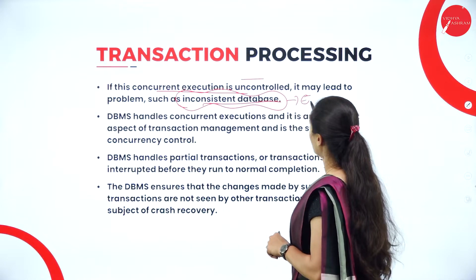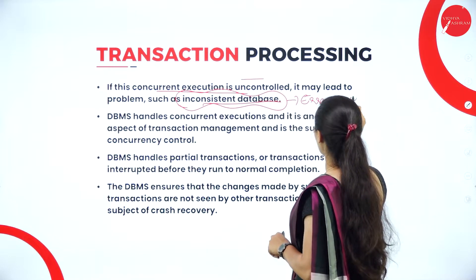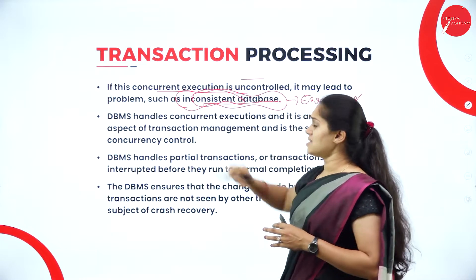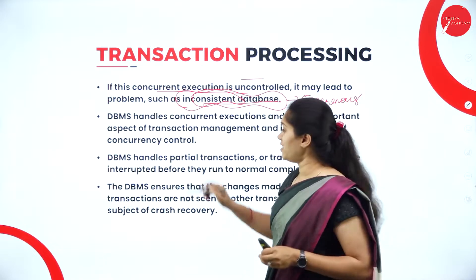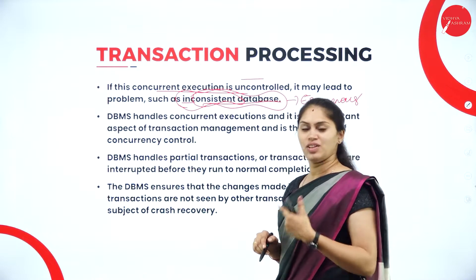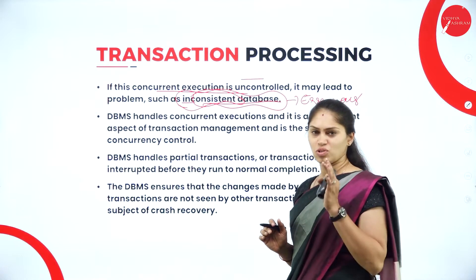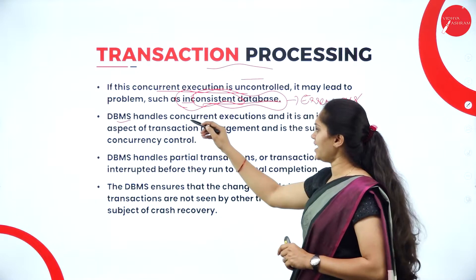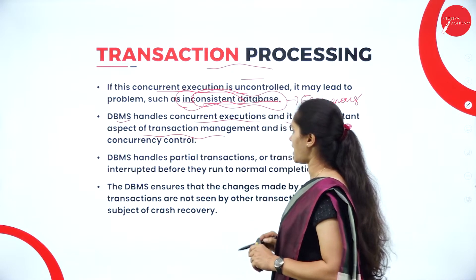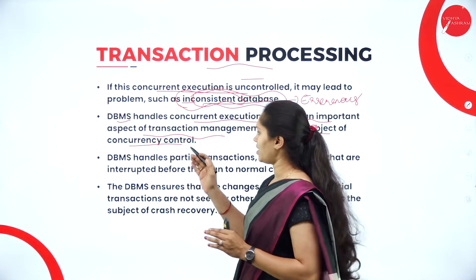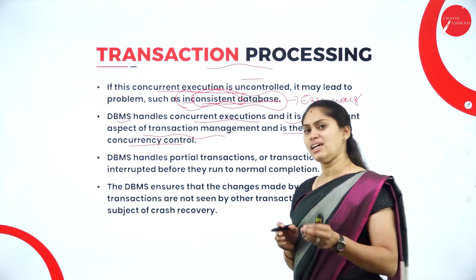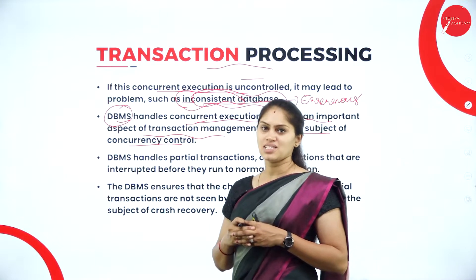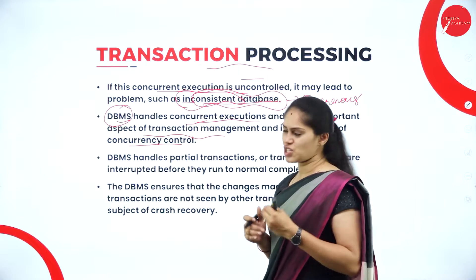An inconsistent database may lead to erroneous data. In order to maintain a normalized, standardized form of data, it is necessary to maintain consistent data. Whatever we have in the database should be consistent. If it is inconsistent, concurrency control will break down. So the DBMS must maintain consistency — it is a mandatory requirement for achieving concurrency control.